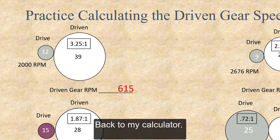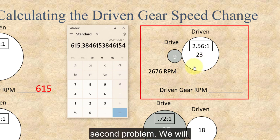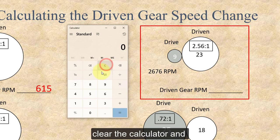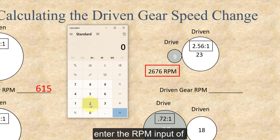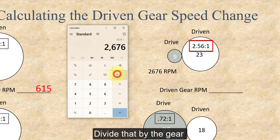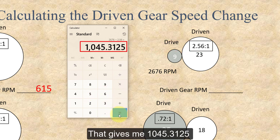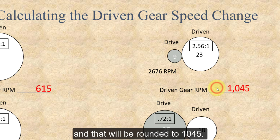Back to my calculator here, we will now calculate the RPM speed change to the second problem. We will clear the calculator and enter the RPM input of 2676. Divide that by the gear ratio of 2.56. That gives me 1045.3125, and that will be rounded to 1045.